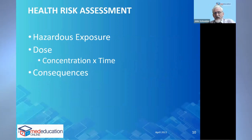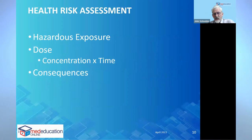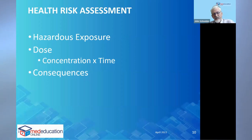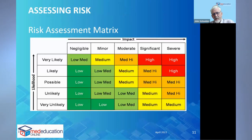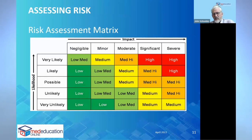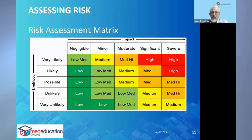If there is exposure, we need to determine the risk, which to some extent depends on the dose — a factor of concentration and time — and then the consequences of that. There are many ways of doing this, but a semi-quantitative approach I find useful is the risk assessment matrix. There are several versions available online; it's something useful to carry around or refer to when doing a risk assessment.